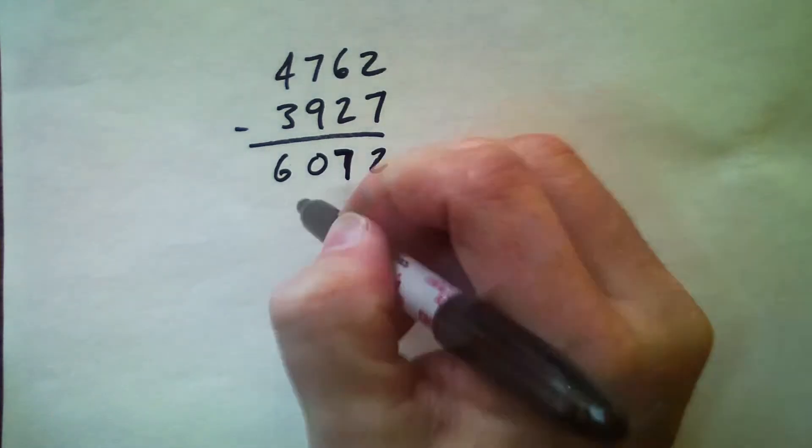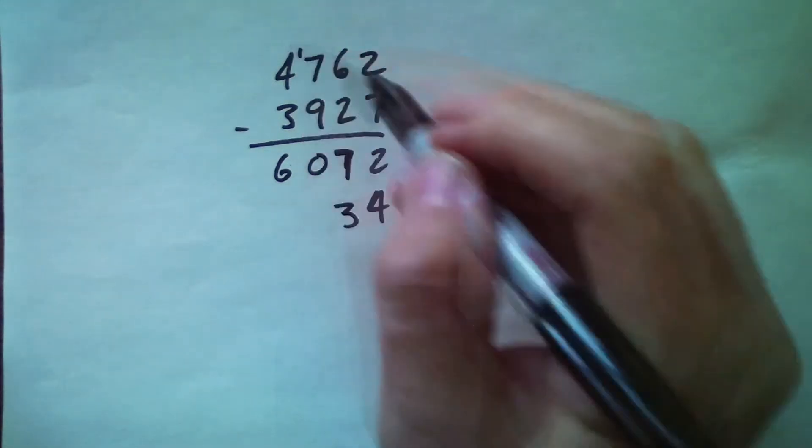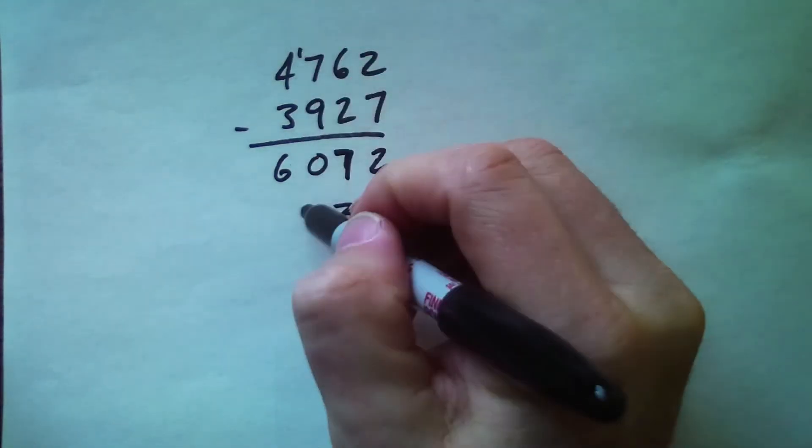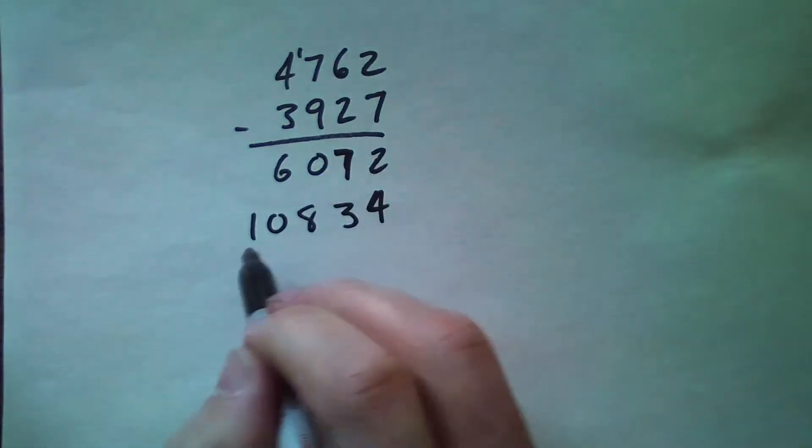All right, so 2 and 2 is 4, 6 and 7 is 13, so 3 carry a 1. So 1 and 7 is 8, and 4 and 6 is 10.